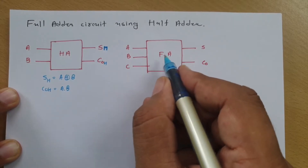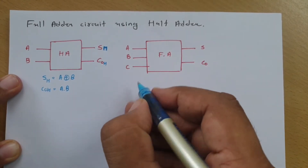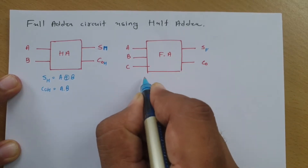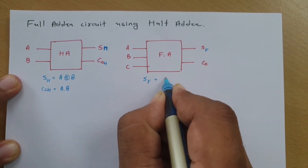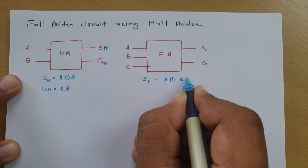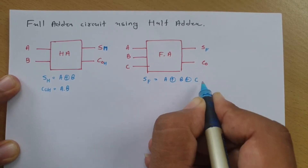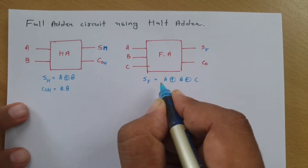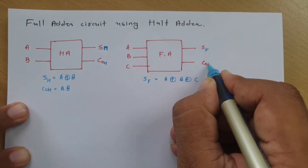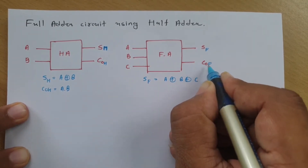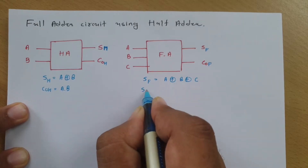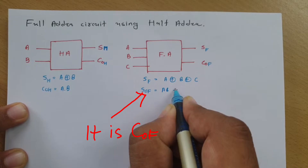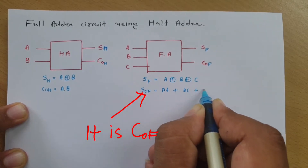Now for the full adder circuit, which is three-bit addition, if we say the full adder sum output is SF, then SF equals A XOR B XOR C. This has already been explained. And the full adder carry, let us say COF, equals AB plus BC plus CA.